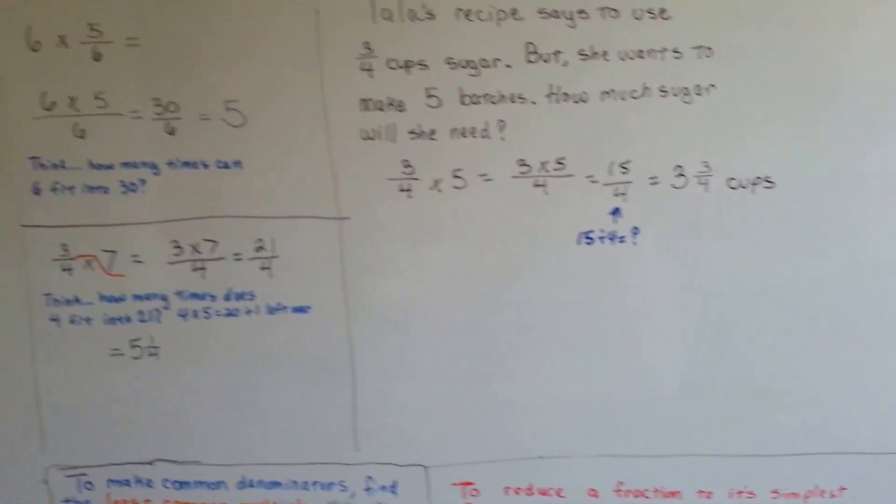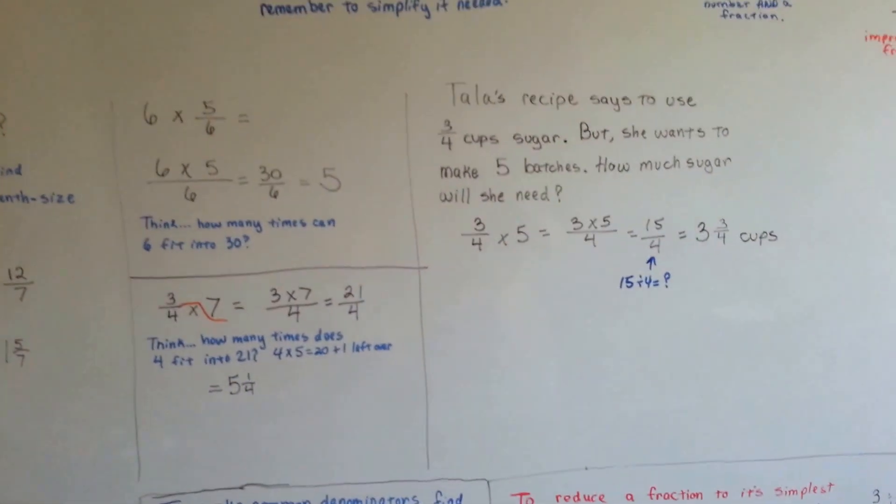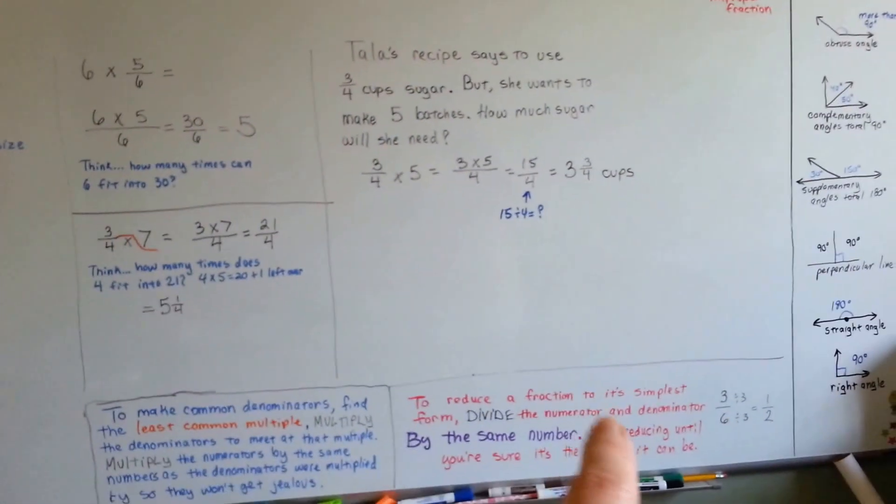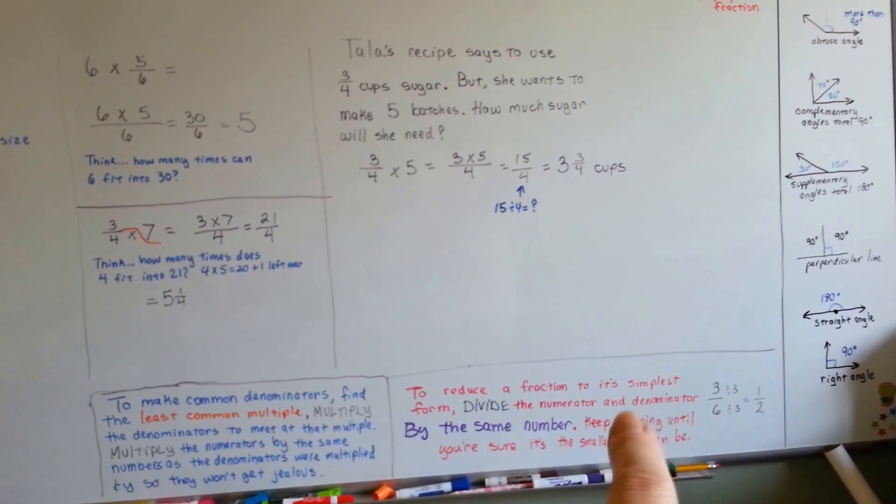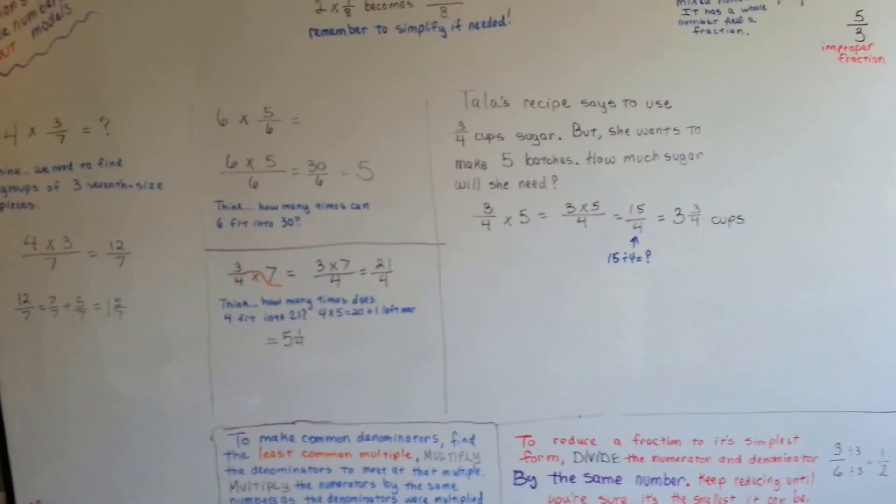Just make sure that you're simplifying. When you're finished, you can't leave them as improper fractions, and you can't leave them as fractions that are equivalent to a simplified one. You've got to make them as small as they can get.